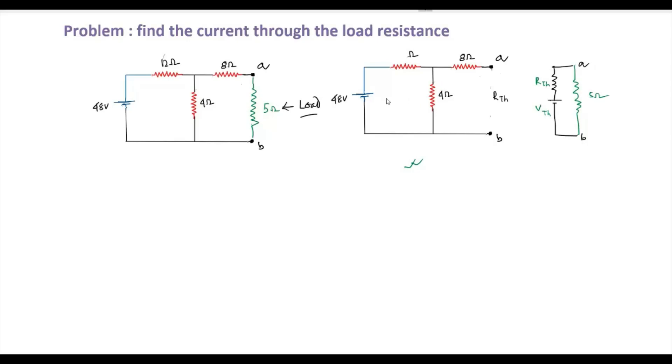According to Thevenin theorem, the 48 volt source with internal impedance R equals zero becomes a short circuit. The 12 ohm and 4 ohm are in parallel. RTH equals 12 parallel 4, which is 12 times 4 by 12 plus 4, plus 8 equals 48 by 16 plus 8.